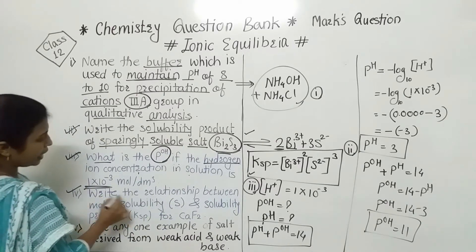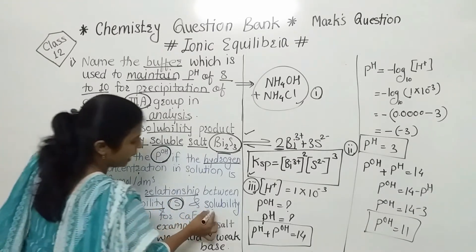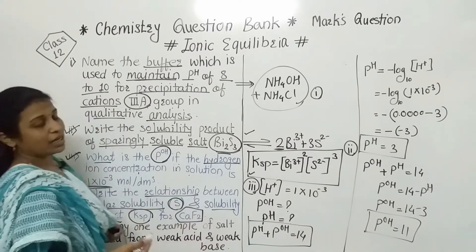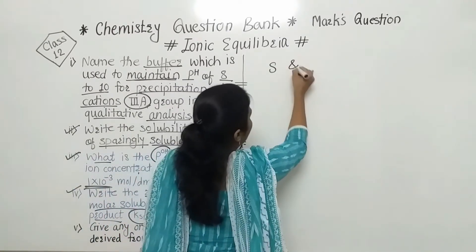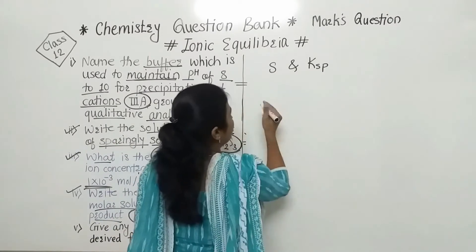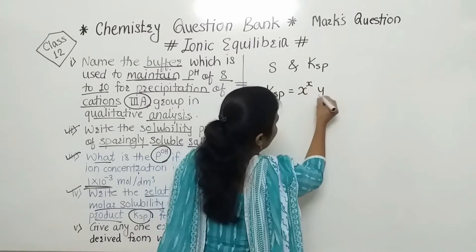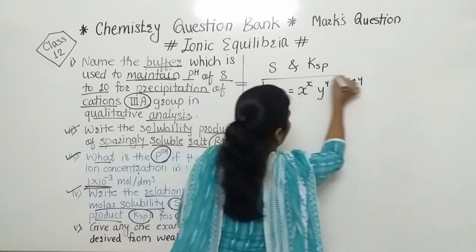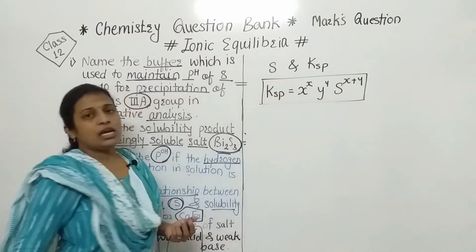We will discuss the fourth question: write the relationship between molar solubility (denoted by capital S) and solubility product Ksp for CaF₂. The main formula is: Ksp = X^X × Y^Y × S^(X+Y). This is the formula we use whenever we want to calculate molar solubility or the solubility product.